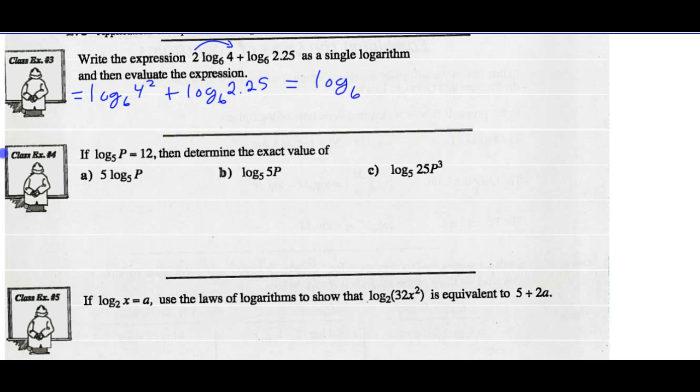So I can write that as a single logarithm. Log base 6 of 4 squared, which is 16, multiplied by 2.25. And I can go ahead and multiply inside the brackets. So log base 6 of 16 times 2.25 is 36. And I can now rewrite that as log of 6 squared base 6. And with our rules, my power rule says I'm bringing that 2 out front. And I know the log of 6 base 6 is 1. So I've got 2 times 1, or that value is 2.